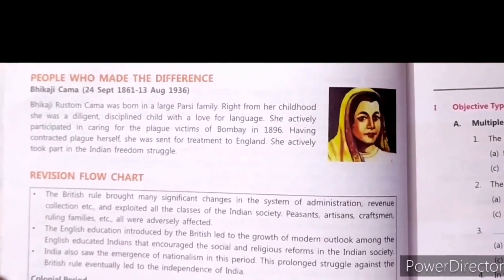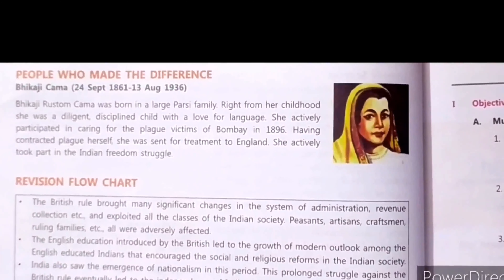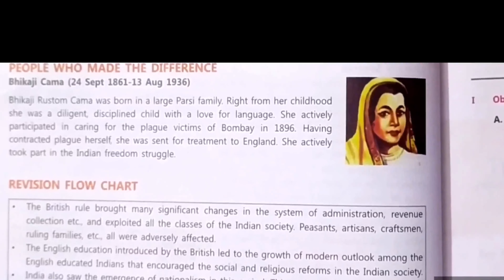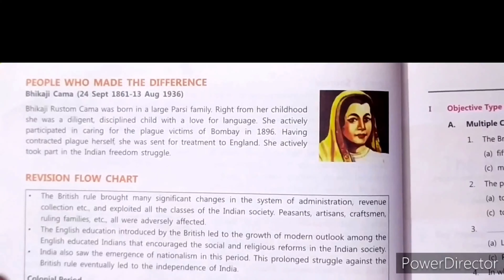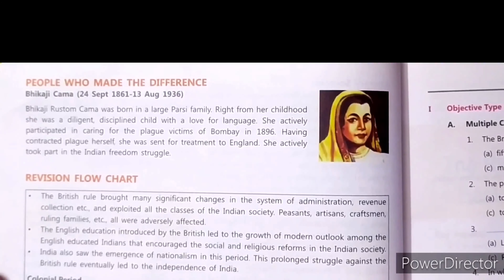My dear children, we are going to talk about the people who made the difference. We are going to talk about Vikaji Kama. Vikaji Rustom Kama was born in a large Parsi family. Right from her childhood, she was a diligent — diligent means very caring — and disciplined child with a love for language. She actively participated in caring for the plague victims of Bombay in 1896. Having contracted plague herself, she was sent for treatment to England.